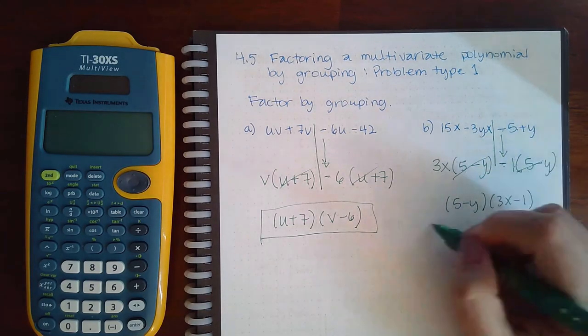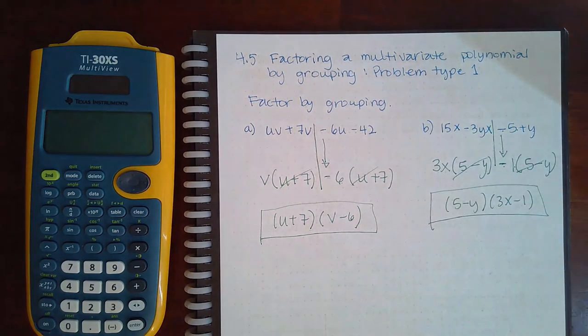If I take those out, I'm left with 3x minus 1. So be sure to keep track of what variables you should be writing in your parentheses.